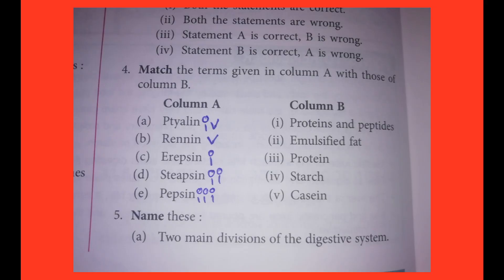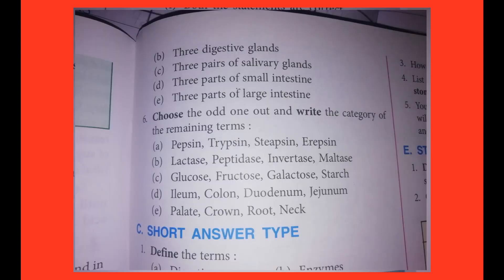Fifth one: Name these. One — two main divisions of the digestive system. Two — three digestive glands. Three — three pairs of salivary glands. Four — three parts of the small intestine. Five — three parts of the large intestine. Answers showing on screen.